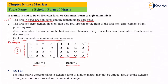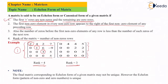Now let's look at the second condition for echelon form. The first non-zero element in every non-zero row appears to the right of the first non-zero element of the preceding row. For example, in row 1 the first non-zero element is 2; in row 2 it is 1; in row 3 it is 3; and in row 4 it is 5.